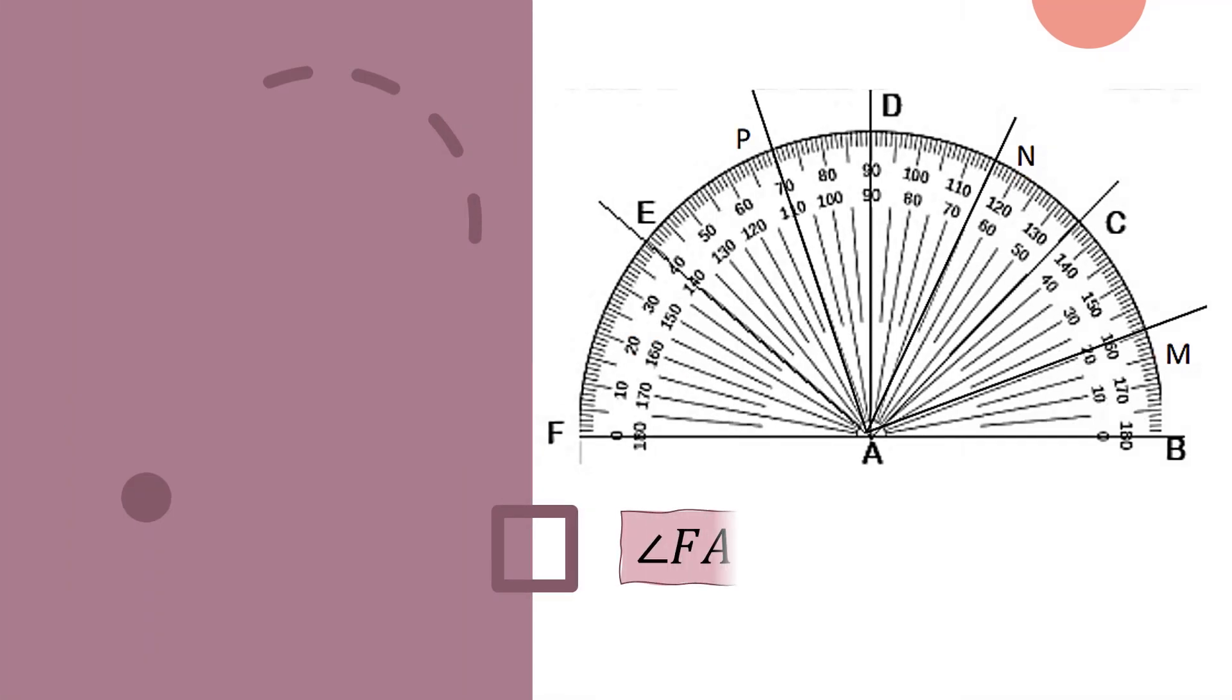Next, angle FAC. As you will notice, there is no letter B. So here we will focus on the outer scale since this is the zero on the left. We start with line AF or FA. Next is our letter C. So since this is our letter C, we will draw a line starting from vertex A to C.